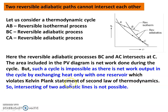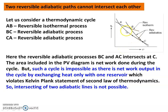Since this violates the Kelvin-Planck statement, the intersection of two adiabatic lines is not possible. In conclusion, in any thermodynamic cycle — which you will study further in higher semesters — two reversible adiabatic lines cannot intersect.